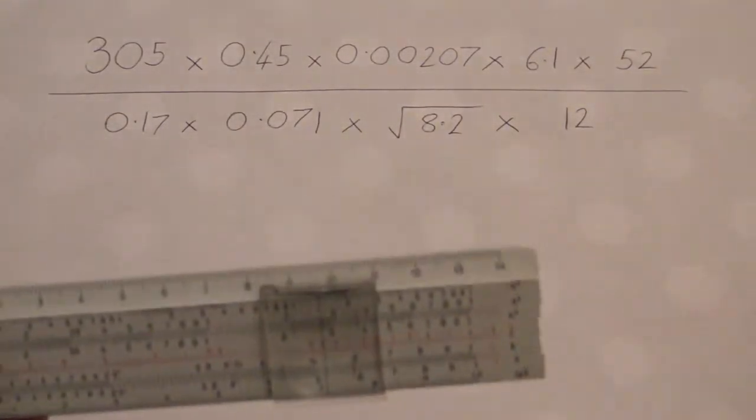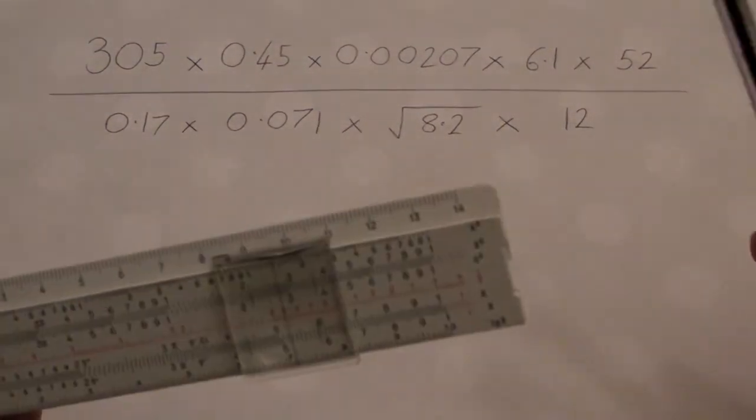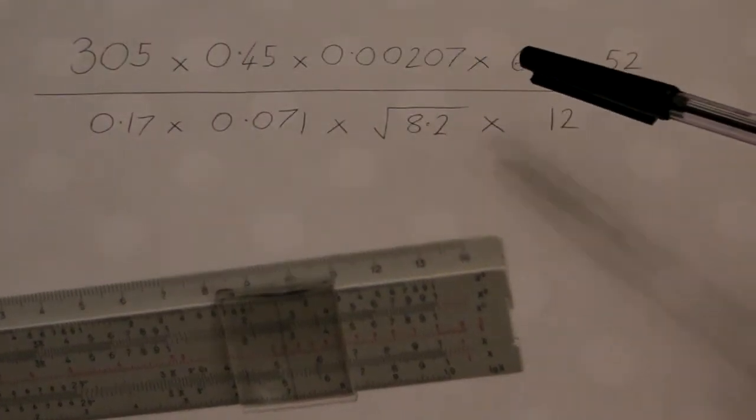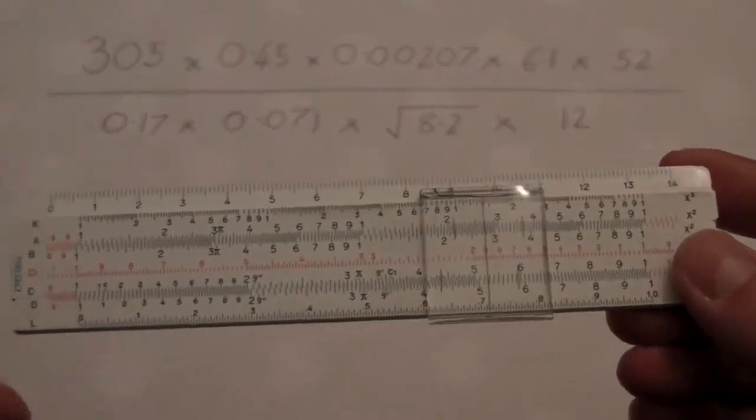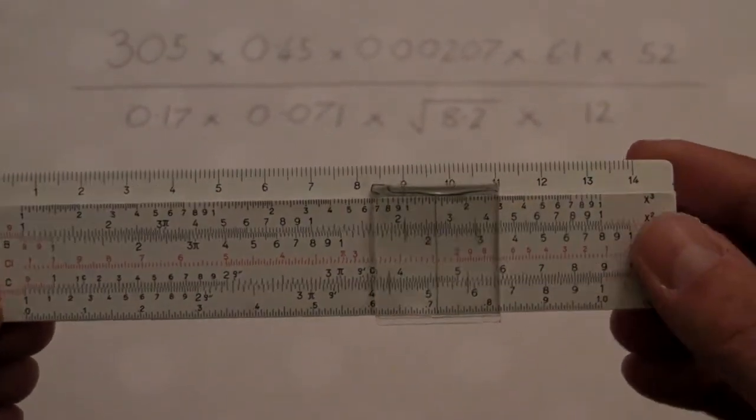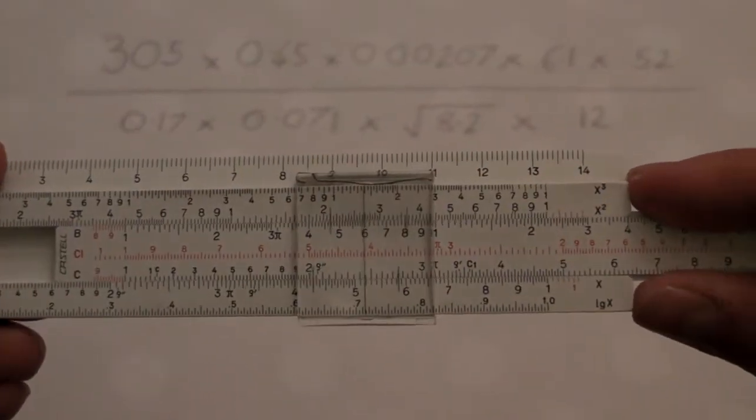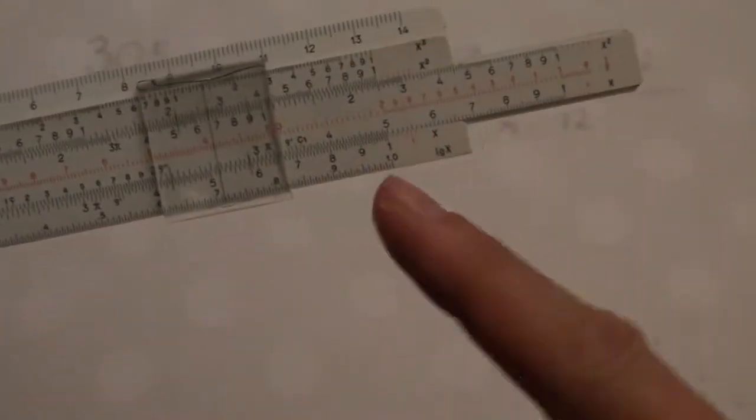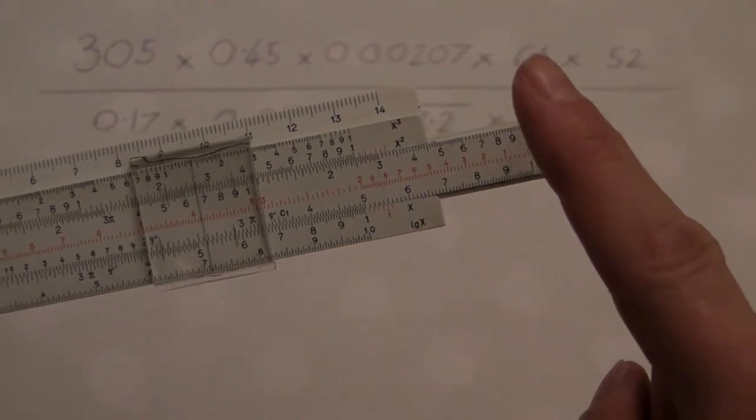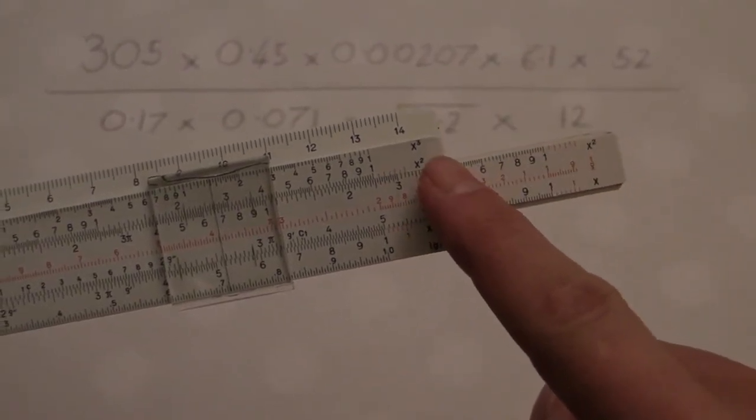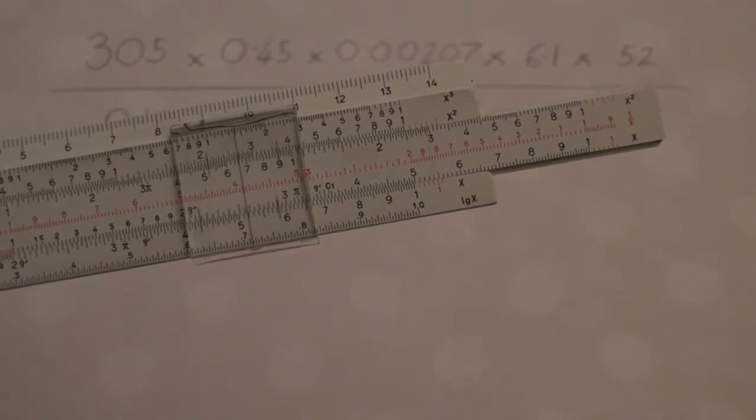So I showed you in the last video that when you are doing a long series of multiplication, you need to keep track of the decimal point. And by way of a reminder, we looked at the fact that if the slide extends out to the right when you're doing a multiplication, you need to take one digit from the number of digits in your answer.